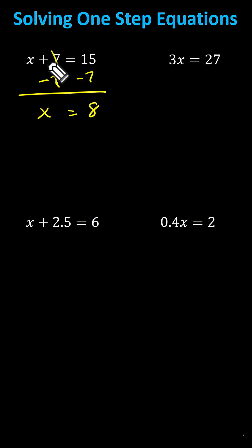Next, we have 3x equals 27. 3x means three times x. To solve for x, we need to undo the multiplication. The opposite operation of multiplying by three is dividing by three. To solve for x, we divide both sides by three.